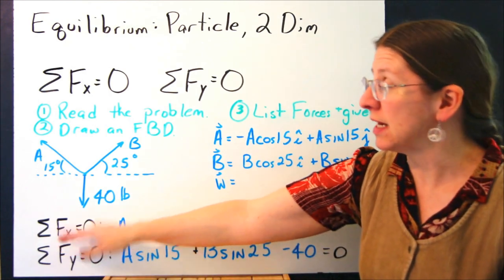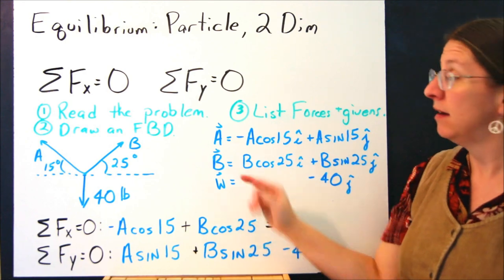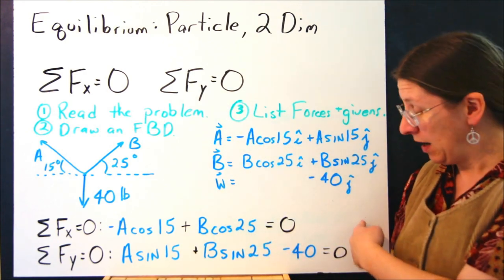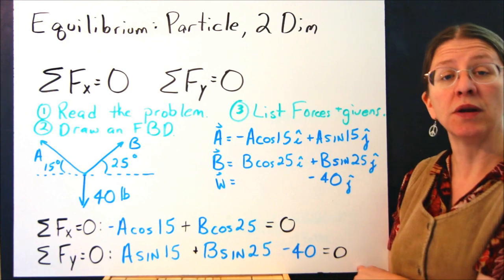To sum the forces in x and set them equal to zero, I'm just going to add the i's. Summing the forces in y and setting them equal to zero sums these three j's. And now I have two equations and two unknowns that I can solve.